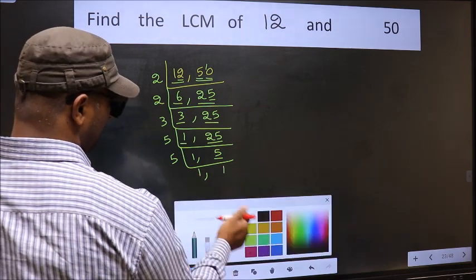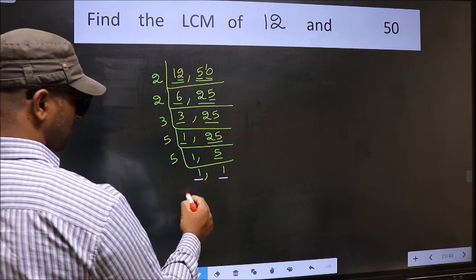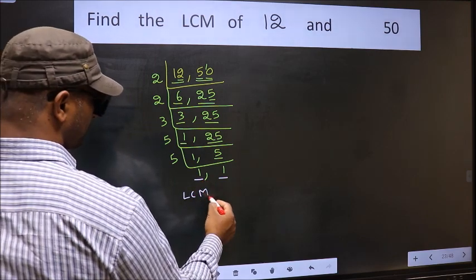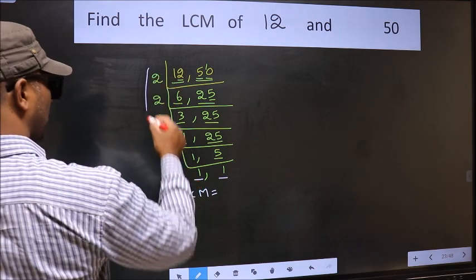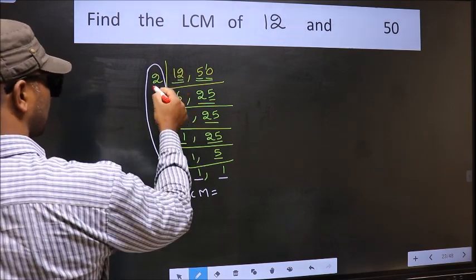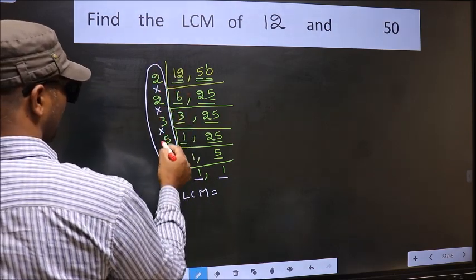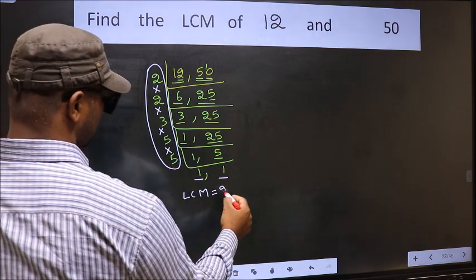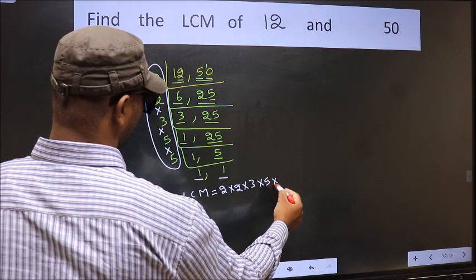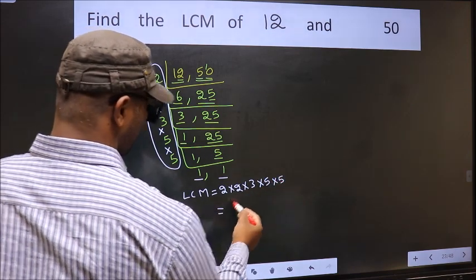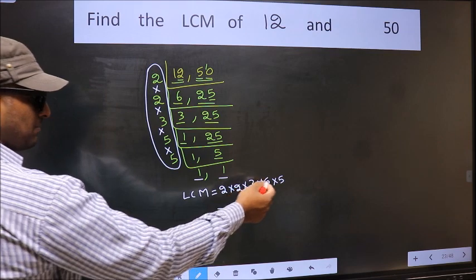So we got 1 in both the places. So our LCM is the product of these numbers. That is 2 into 2 into 3 into 5 into 5. So let us multiply these numbers.